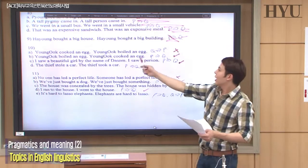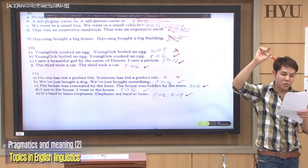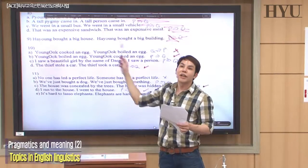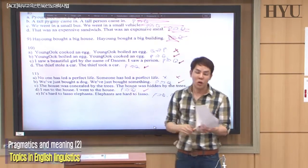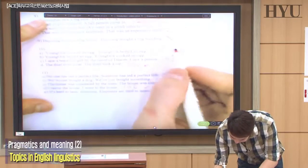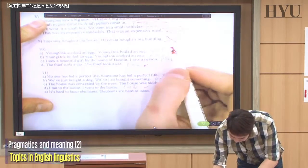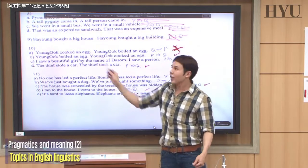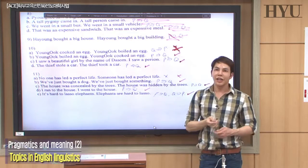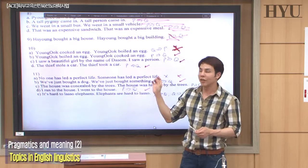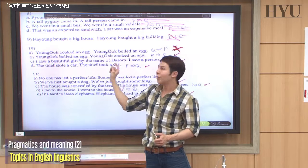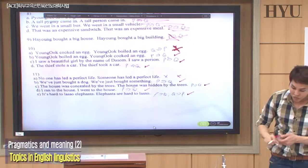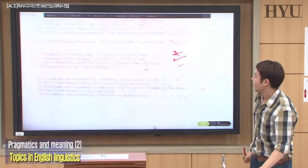Number ten: 'Young Ook cooked an egg' and 'Young Ook boiled an egg.' Does cook necessarily mean boil? No. So the first one doesn't entail the second. But if you switch the order — 'Young Ook boiled an egg' and 'Young Ook cooked an egg' — that is an entailment, because when you boil something, you cook it in boiling water. Boiling is more specific, so the first entails the second.